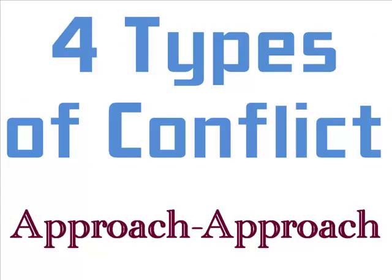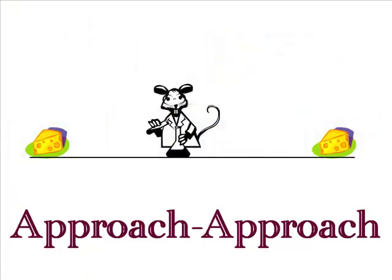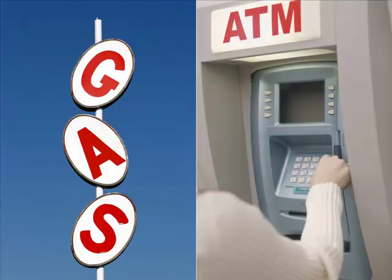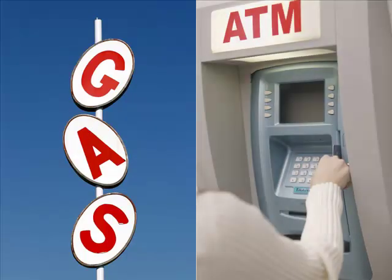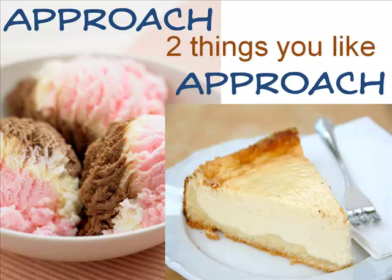Approach-approach is the choice between two things you like. If you put a mouse in the center of a straight maze with food at each end, it goes to whichever goal is closer. People do the same thing — they choose grocery stores, banks, and gas stations this way. Assuming they are about equal value, you choose on the basis of convenience — that is, immediacy of drive reduction.